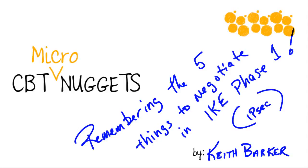Remembering the five things to negotiate in IKE Phase 1. For an IPsec tunnel there are five specific things that need to be negotiated and agreed to before the IPsec tunnel build can continue. In this micro nugget I'm going to give you a very easy and fun way to remember each of those five items. Let's jump in.